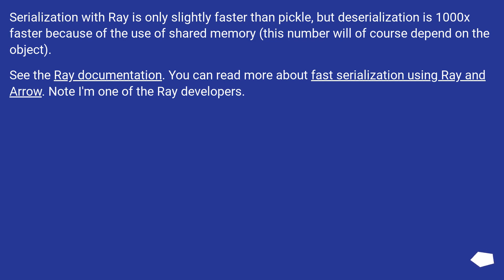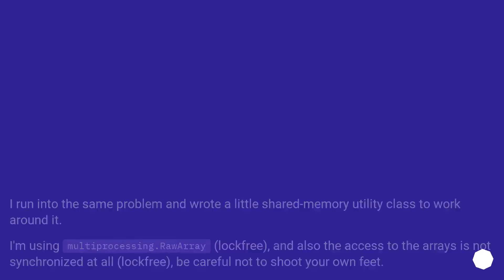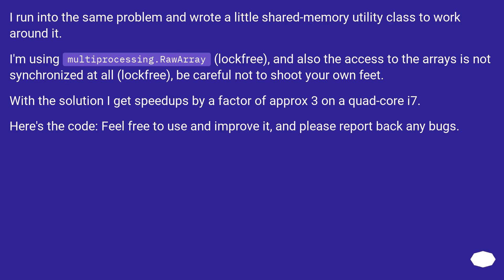I ran into the same problem and wrote a little shared memory utility class to work around it. I'm using multiprocessing.RawArray, lock-free — the access to the arrays is not synchronized at all, so be careful not to shoot your own feet. With this solution I get speedups by a factor of approximately 3 on a quad-core i7. Here's the code. Feel free to use and improve it, and please report back any bugs.